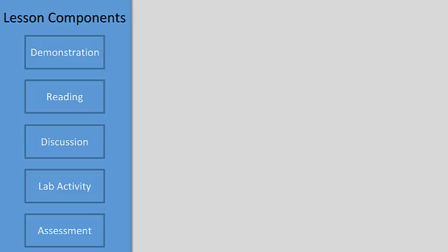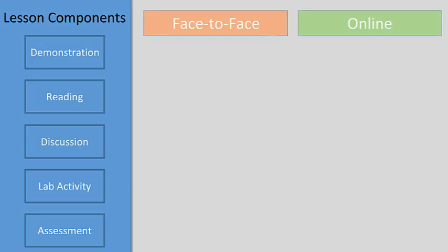Once you've established the different components that your lesson will contain, you can start having a conversation with yourself about what exactly you want to accomplish with each one. This will lead you into thinking about which environment, online or face-to-face, will offer the greatest outcome for supporting that goal.